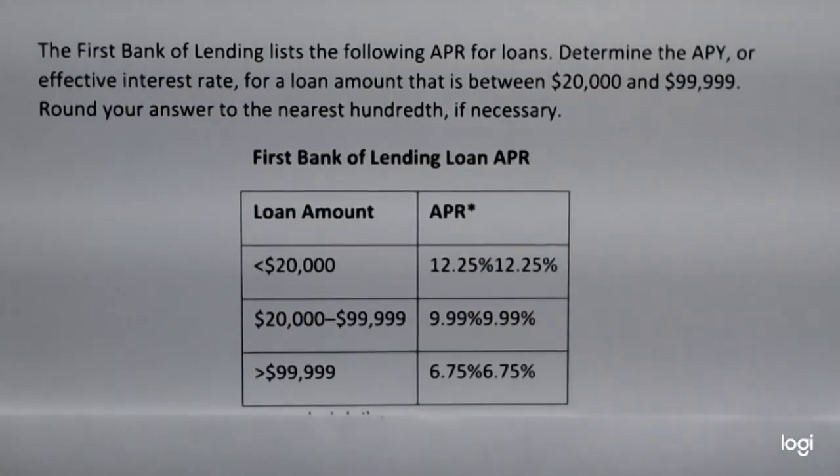The First Bank of Lending lists the following APR for loans. That would be annual percentage rate. Determine the APY, annual percentage yield, or effective interest rate for a loan amount that is between $20,000 and $99,999.